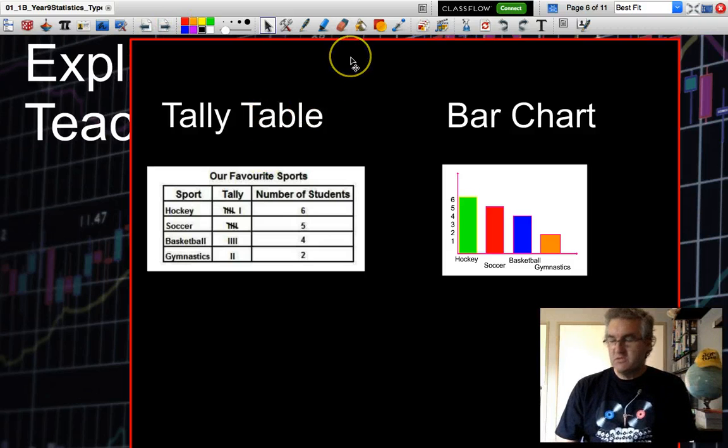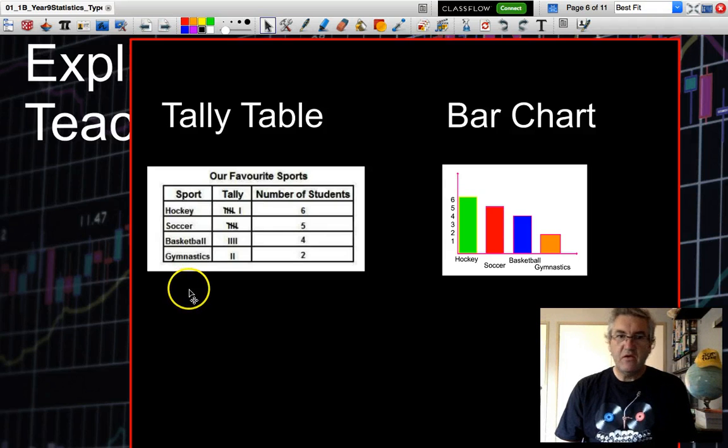Typically when we do a survey, we would collect the information and put it in a table such as a tally table. This situation here, the survey has been conducted and we've been asking people of their favorite sports. Here is the tally, and then we total the tally to find out the total numbers for each of those sports.